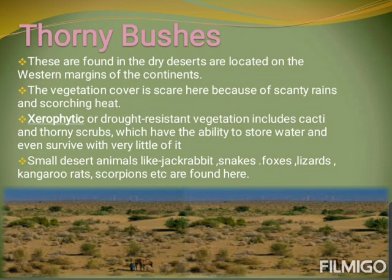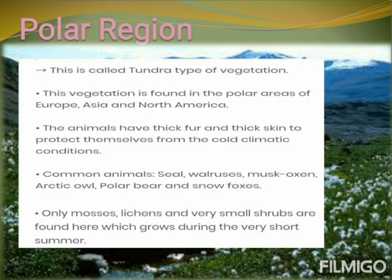Polar regions have what is called tundra type of vegetation. This vegetation is found in the polar areas of Europe, Asia, and North America. The animals have thick fur and thick skin to protect themselves from the cold climatic conditions. Common animals include seal, walruses, musk oxen, arctic wolf, polar bear, and snow fox.